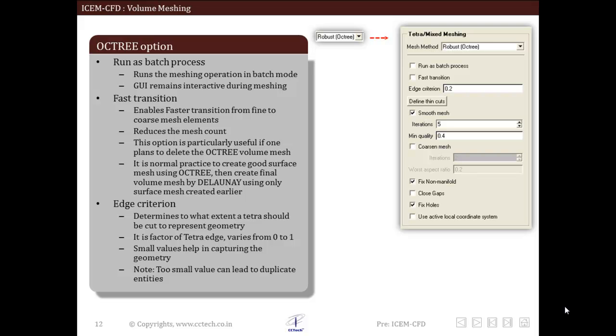In this slide we will see options available in octree. First is run as batch process. During the compute mesh operation, GUI remains inactive so no other operation can be performed. Running as batch process frees the GUI to perform other tasks while mesh is computed in the background.